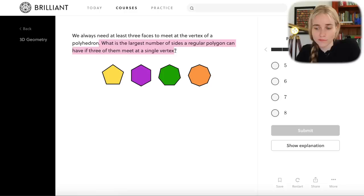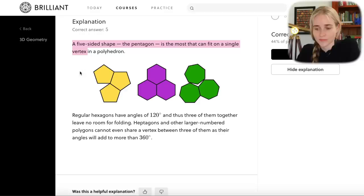What is the largest number of sides a regular polygon can have if three of them meet at a single vertex? This one's a little tricky, but the correct answer is five. A five sided shape, the pentagon is the most that can fit on a single vertex.